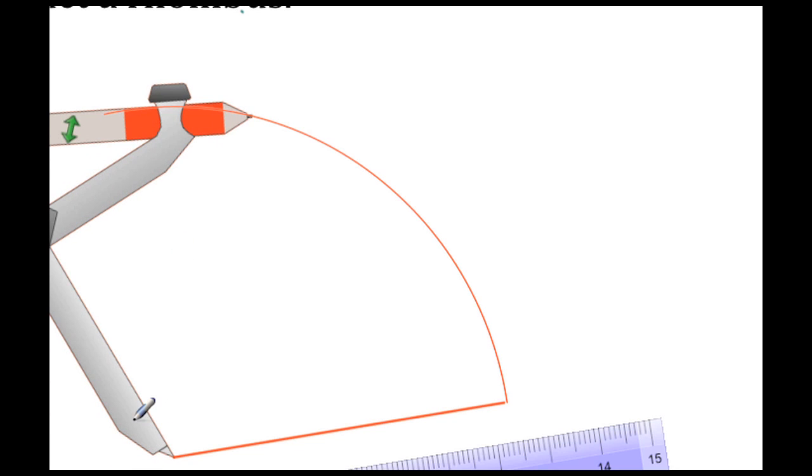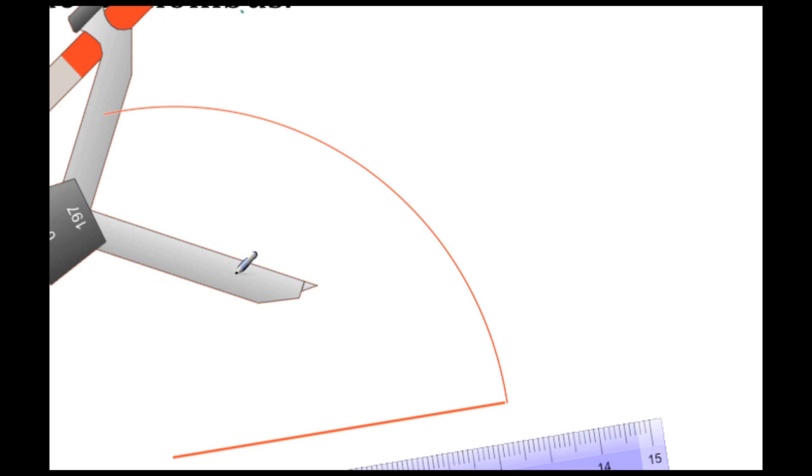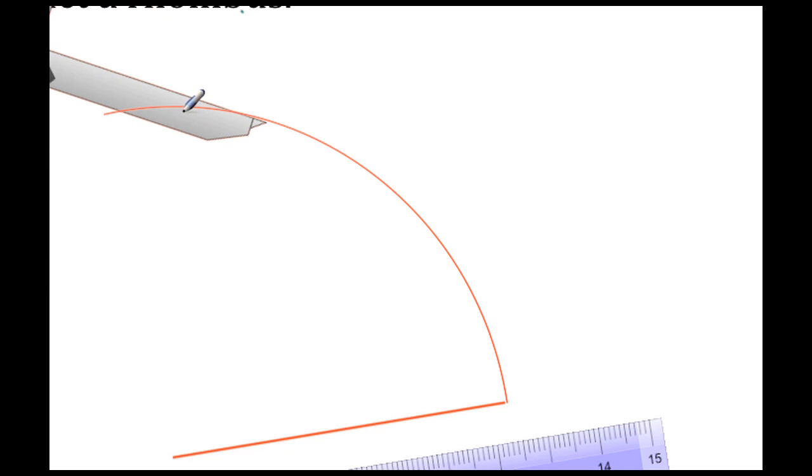Once we've created this arc, we can then take our compass and place it at any point on this arc. We do that because any point on this arc is the same radius or the same distance from this starting point. Once that's done, let me just put a dot in that location, and then what I need to do is create another arc.